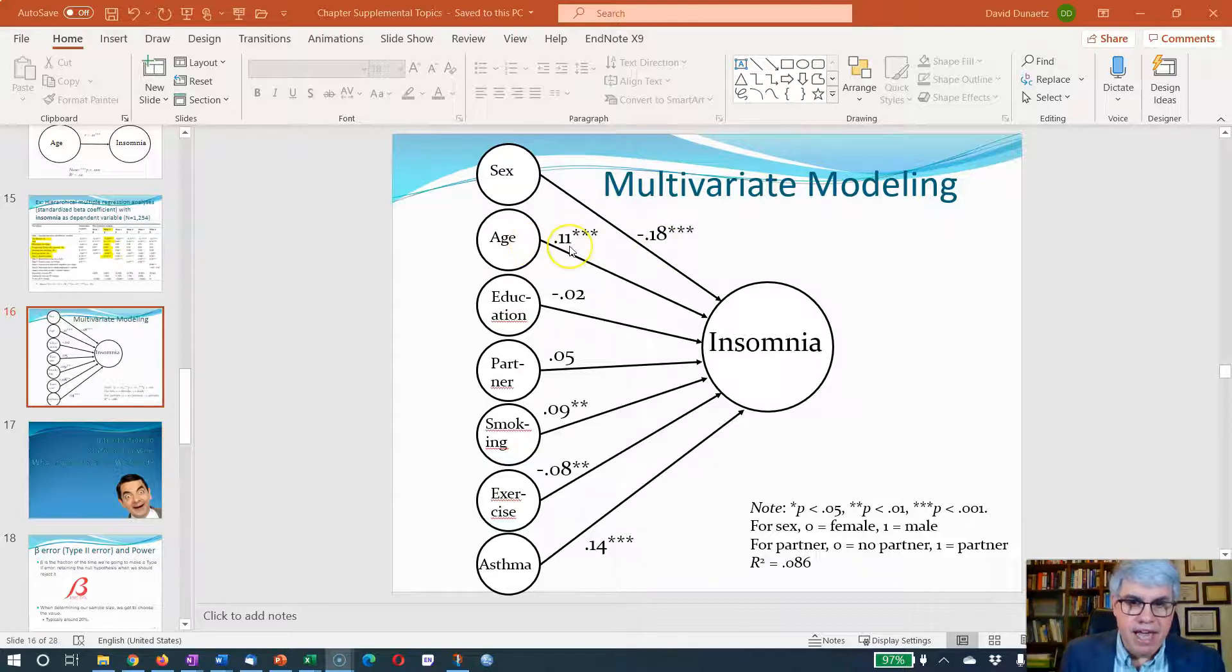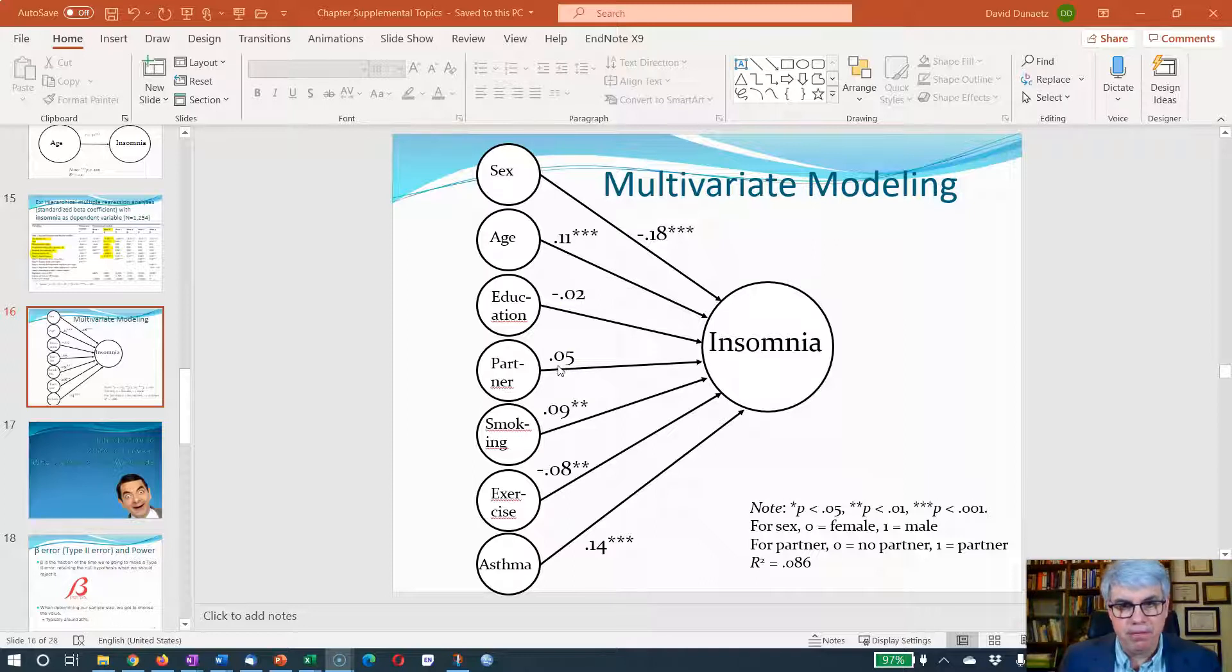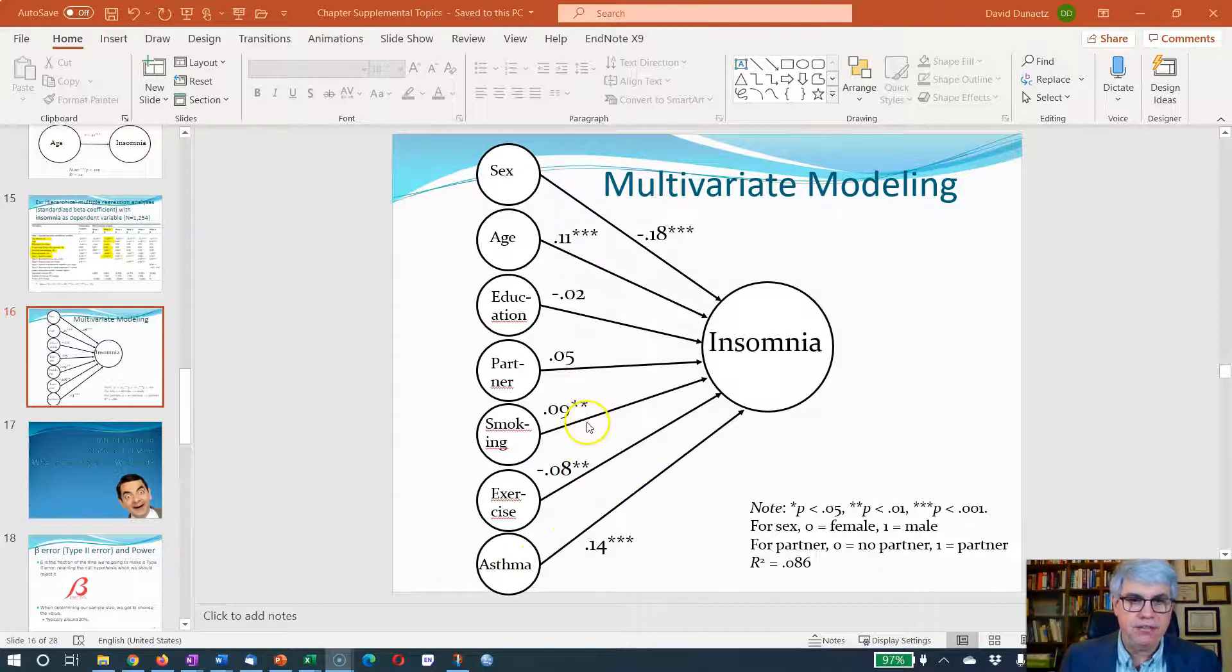We've got all of these beta coefficients here and we can draw this in an image like this. So here is how we draw a multivariate model with seven variables in it. We have sex, age, education, partnership, smoking, and exercise as the control variables, and then we add asthma there. We put the betas by each line. We're putting stars according to their significance: one star for p less than 0.05, two for less than 0.01, and three for less than 0.001.